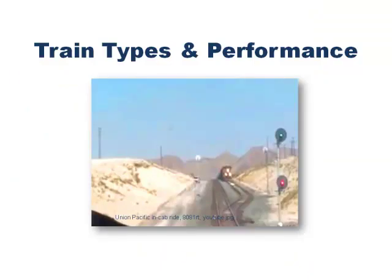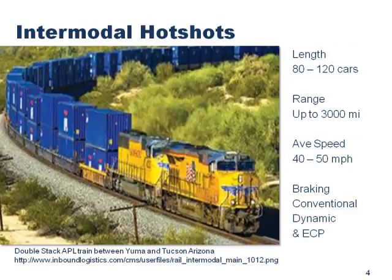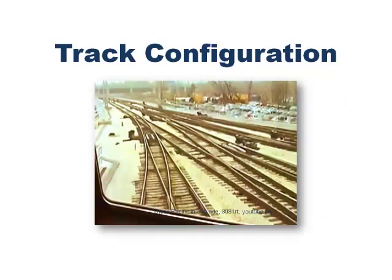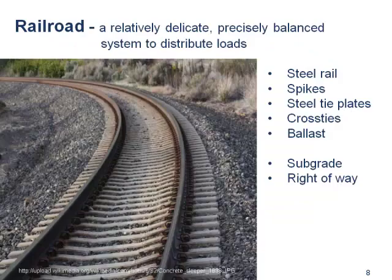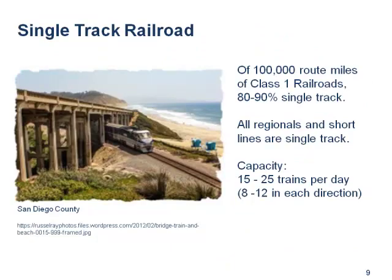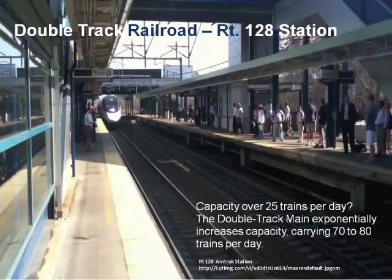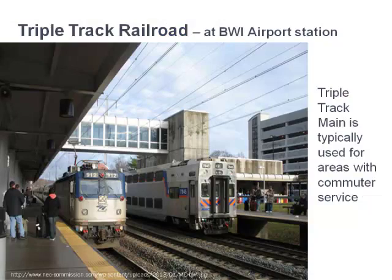We'll discuss the various freight and passenger rail train types and their performance characteristics. We'll take you through the single, double, triple, and quadruple track railroad worlds and describe ways to increase railroad capacity through modifications to track structure.